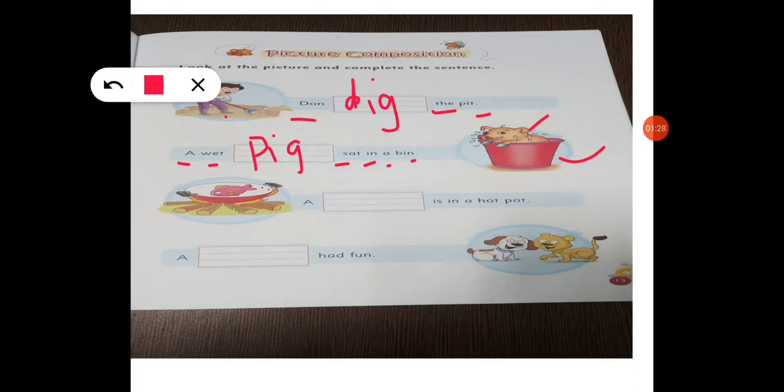Now, look at this picture. There is a pot. And what is this? Fish. Fish is in a hot pot. Kaan peh hai? It's in a hot pot.